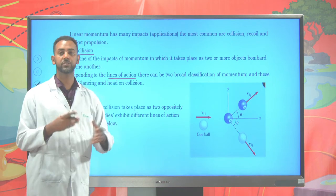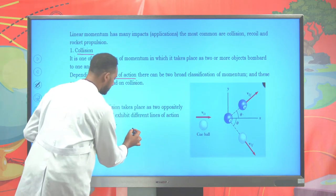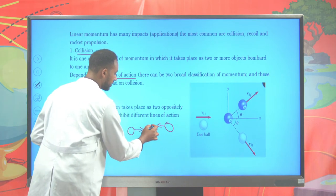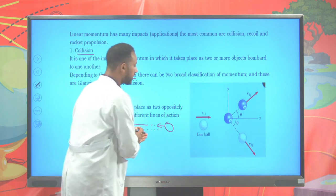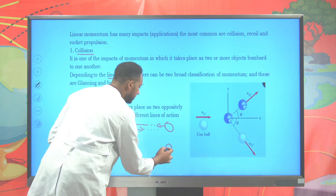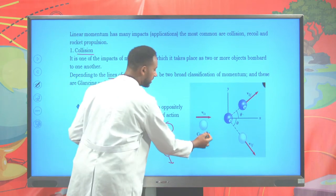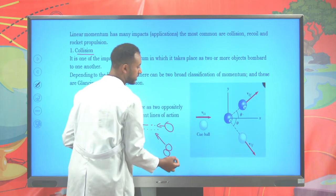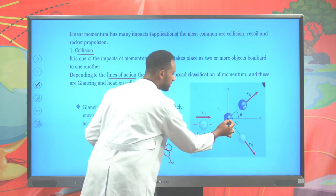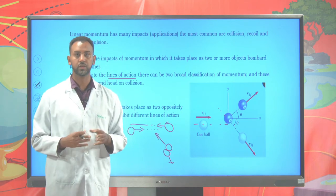Glancing collision has two different lines of action before and after collision. Suppose you have two objects — object one moving in one direction and another object moving in a different direction. After they collide, their lines of action will change. For example, with a cue ball moving in one direction and colliding with another object, it changes direction, and the other object, which was at rest, moves in a different direction. Such a collision is known as glancing collision.